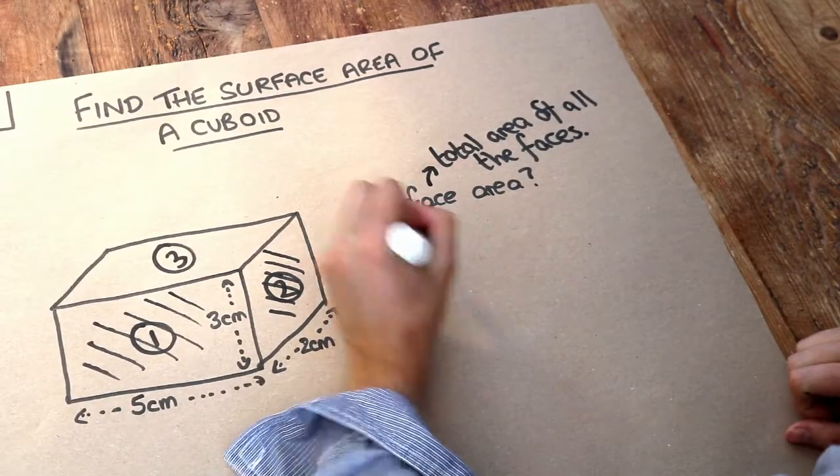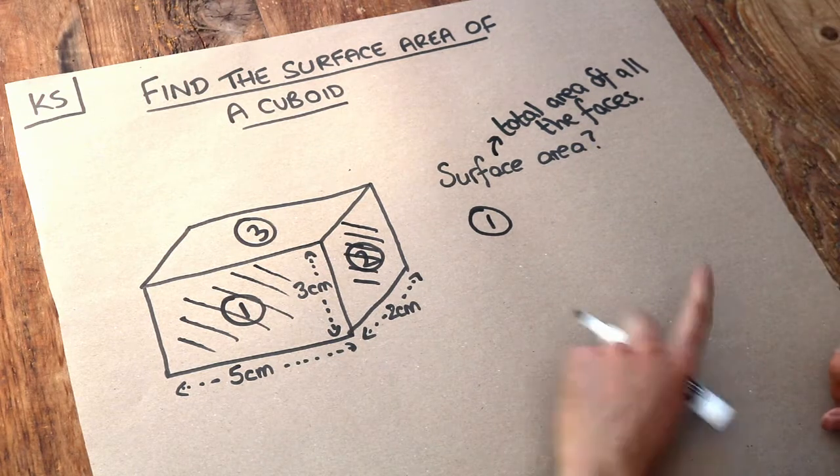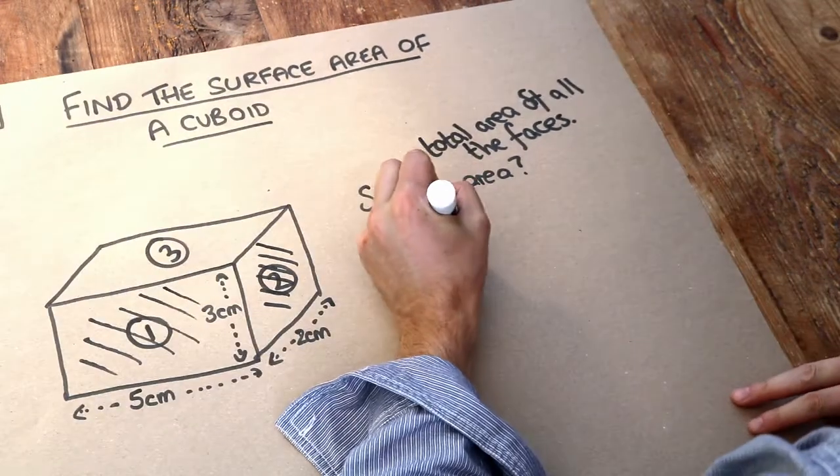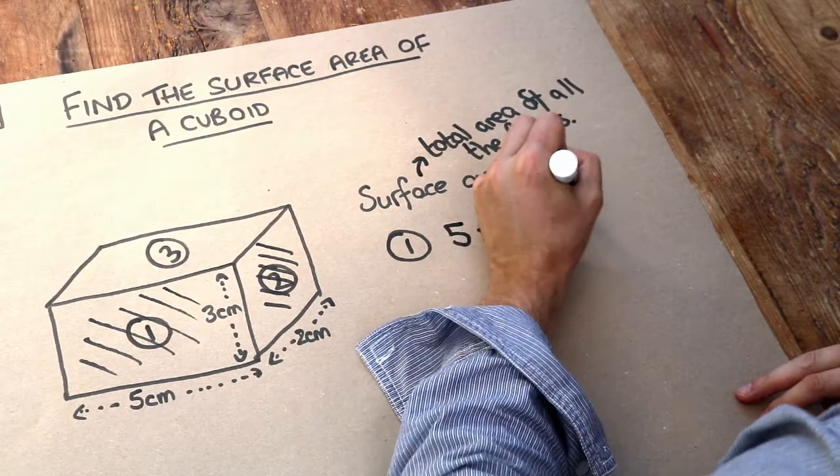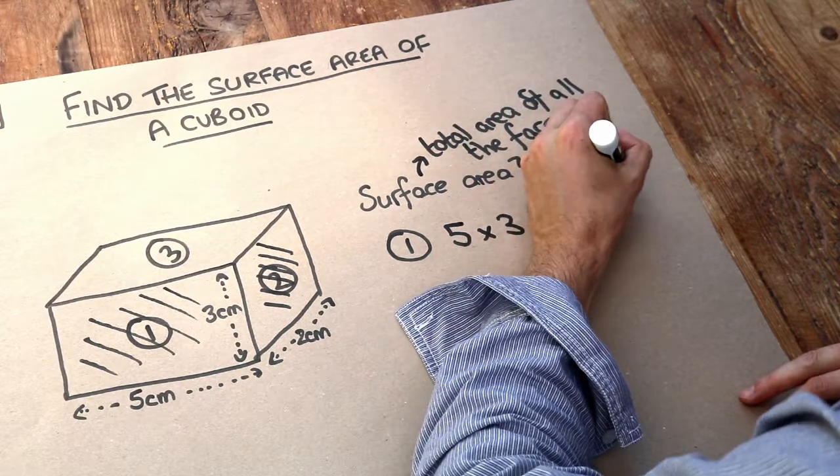Now what's the area of face 1? It's a rectangle and the area of a rectangle is just the length times the width. So we just do 5 times 3 which is 15, and it's a unit of area. It's going to be centimetres squared.